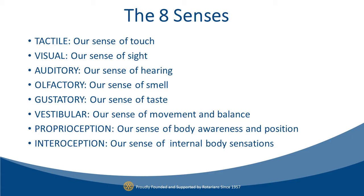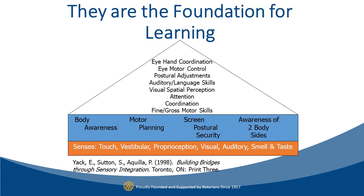We're going to be learning about all of them very soon. The visual on this slide helps illustrate the importance of our senses and our ability to process sensory information correctly to develop other skills. Our senses and sensory processing provide the foundation for higher level skills. You can pause this presentation and look at which senses and skills need to be developed at the bottom of the pyramid for higher level skills to flourish. This is why sensory processing matters.